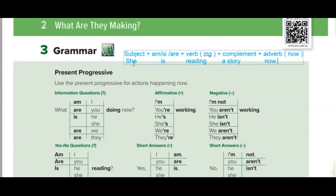The subject in English is one of the seven pronouns: I, we, you, he, she, it, or they — or a singular noun or a plural noun. The be verb (am/is/are) is determined by the subject: use 'am' with I; use 'are' with we, you, they, or a plural noun; use 'is' with he, she, it, or a singular noun. Then add ing to the main verb — the ing form indicates the action is happening now.